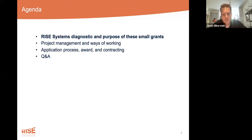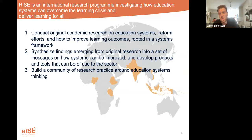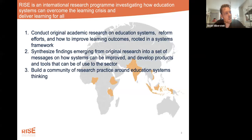First, let me give a brief overview of RISE in case you're not familiar with it. RISE is a research program seeking to understand education systems, why there is a learning crisis in many current systems, and what we can do to address it. RISE does this through three streams of activities. First, RISE has a lot of original research — we have seven country teams, shown in orange on the map, and some cross-country teams that look at the political economy of education. These research teams are largely independent but tie back to the RISE systems framework.